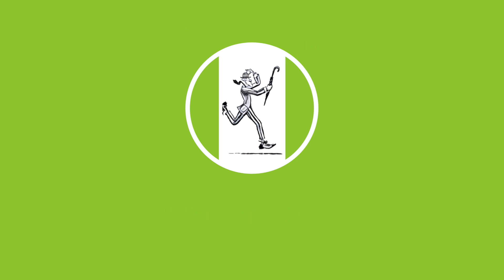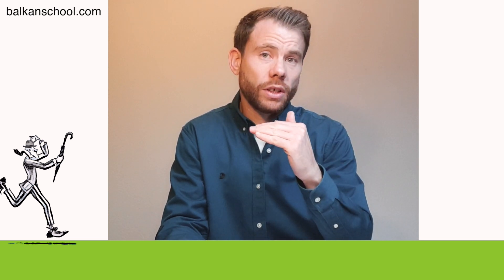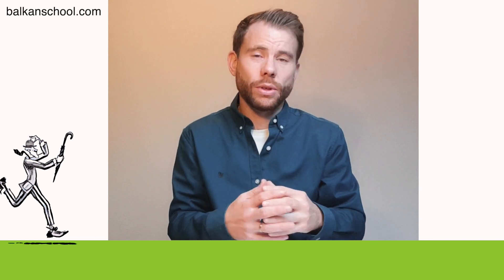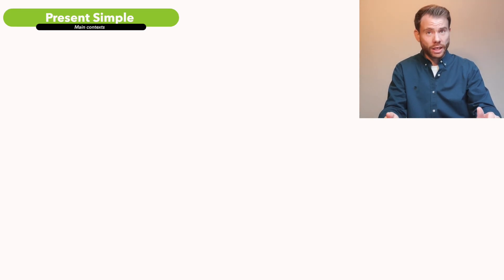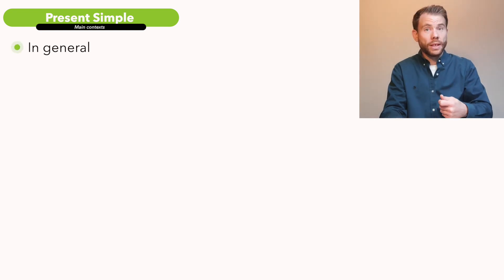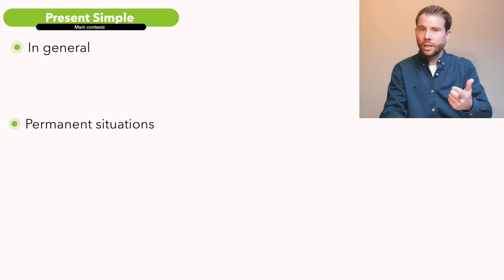So we're going to look at and compare the two different tenses — the present simple and the present continuous. We'll look at some different contexts, I'll give you some examples, and hopefully clarify the difference between these two. So first, the present simple. You use the present simple mainly in the following contexts: when you're speaking in the present in general, when you're speaking about permanent non-changing situations, and when you're speaking about facts.